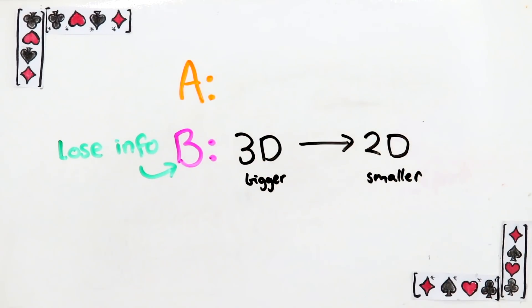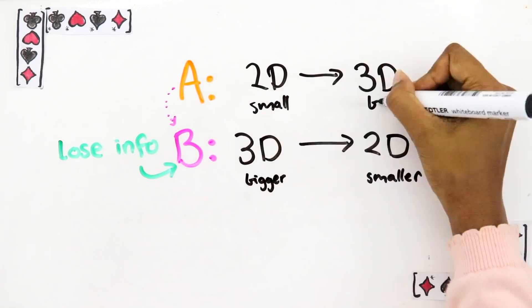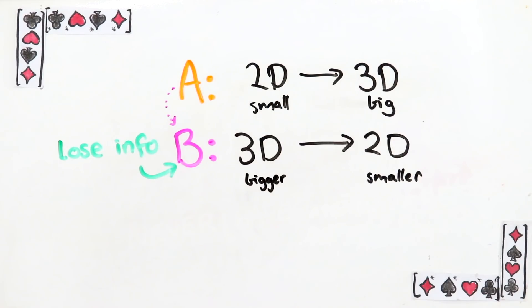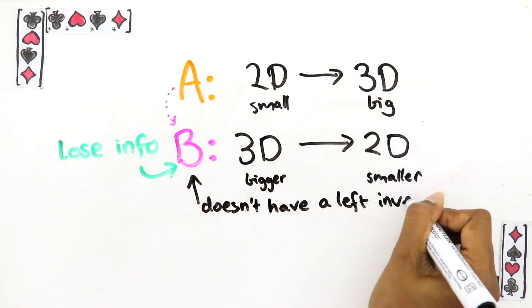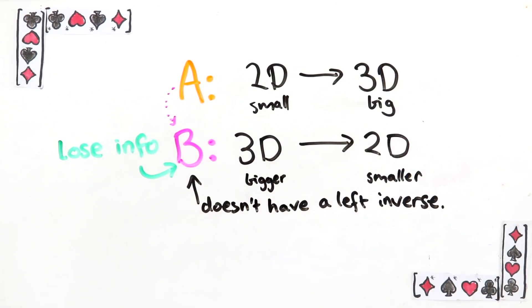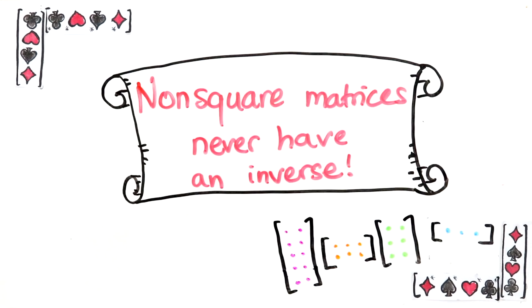If you have a matrix from a smaller to a bigger dimension, it is possible for it to have a left inverse, like A did in our example. But its left inverse goes from big to small, like B, and so it can't be undone. Hence, even though some non-square matrices have left inverses, they never have an inverse.